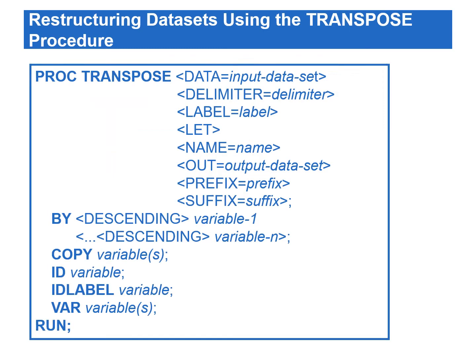There are six statements in the transpose procedure, and eight options in the PROC TRANSPOSE statement. These statements and options are used to apply different types of data transpositions, and to give the resulting data set a different appearance.